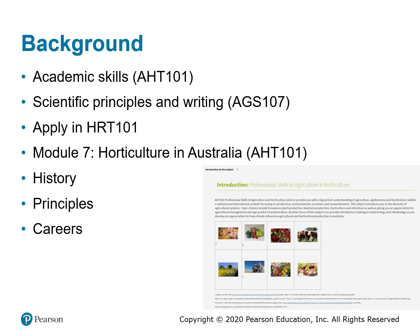It's also important to know the content of Module 7, Horticulture in Australia, from the subject AHT 101, which provides assumed knowledge relevant to this subject. That content is necessary background information, so if you haven't done that subject, it's important that you get hold of the module and study it.